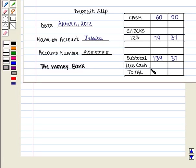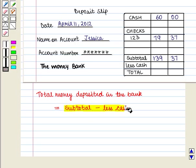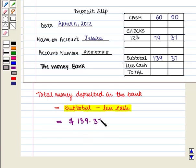Jessica does not receive any cash back as she deposits all the money, so the less cash column will be left blank. Lastly, we write the total money deposited in the bank, which is given by subtotal minus less cash. This is equal to $139.37 minus $0, which equals $139.37. Hence we write the total as $139.37.